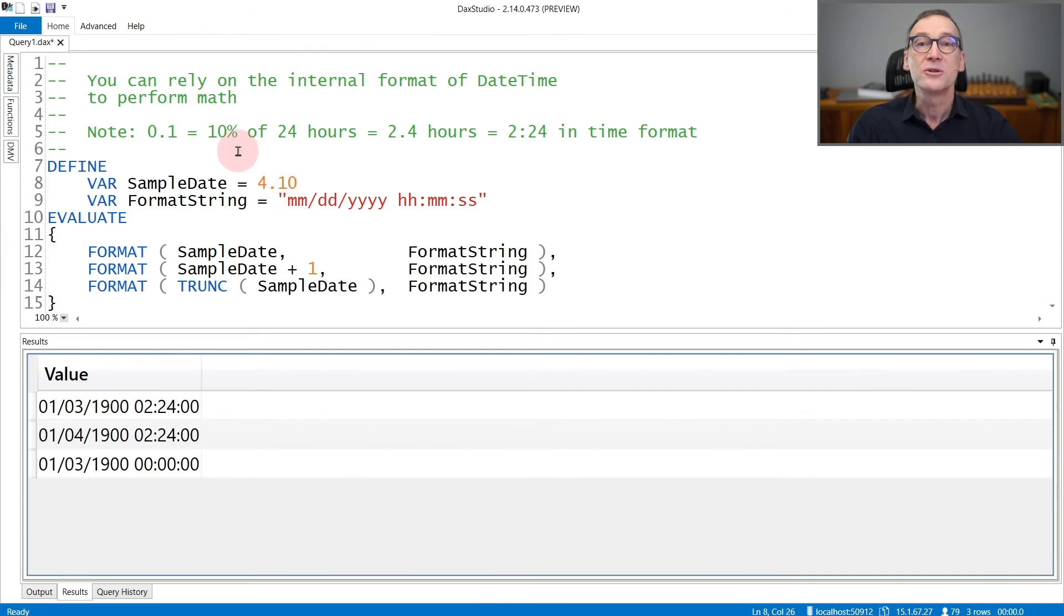.10 is 10% of 24 hours, that is 2.4 hours in decimal representation. If we move it to time representation, it is 2:24.